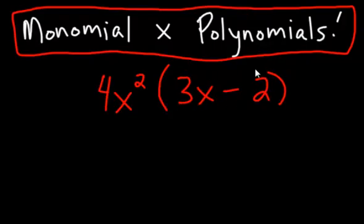No, it's not. It's a binomial. There's two terms. There's a 3x and there's a negative 2. Okay? So we're going to multiply this monomial by this two-term polynomial called a binomial.